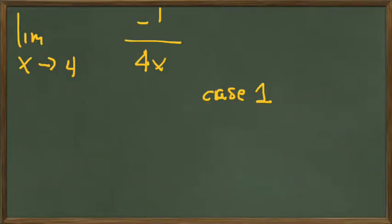So it's a case 1 limit. We can just plug in the x value 4, because we no longer have a 0 in the denominator. And we get minus 1 over 4 times 4,